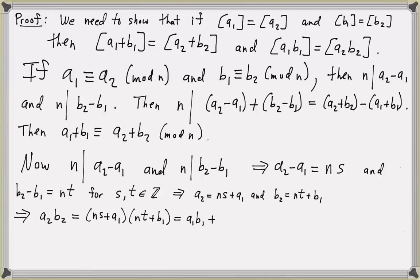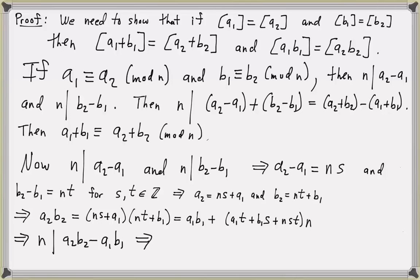Combining all the terms together, we get a2 times b2 equals a1 times b1 plus an integer multiple of n — specifically a1t plus b1s plus nst, all times n. So this implies that n divides a2b2 minus a1b1, meaning a1b1 is congruent to a2b2 mod n. We can conclude that the residue class of a1b1 equals the residue class of a2b2, and therefore multiplication is also well defined.